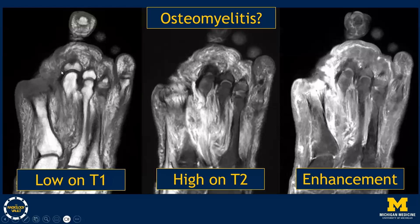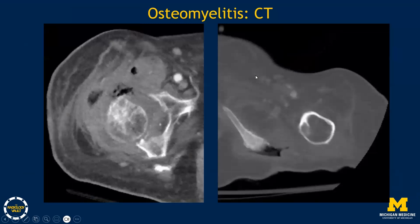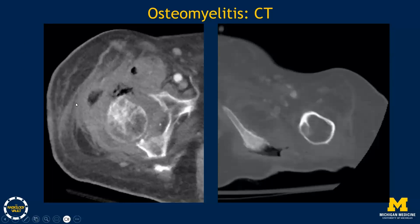Another example shows axial foot MRI images from a patient with an ulcer over the first metatarsal head, demonstrating marrow replacement on T1-weighted images with edema and post-contrast enhancement — the signal characteristics consistent with osteomyelitis. Regarding CT findings: we look for lucency and erosion in the acute setting, and chronic changes like sclerosis. One case shows soft tissue gas and hip joint effusion suggestive of septic arthritis with patchy lucency and early erosion of the femoral head. Another shows a decubitus ulcer with gas tracking to a sclerotic ischial tuberosity and periosteal reaction consistent with chronic osteomyelitis.